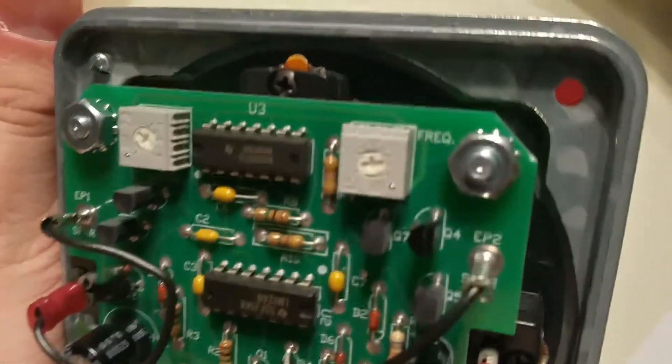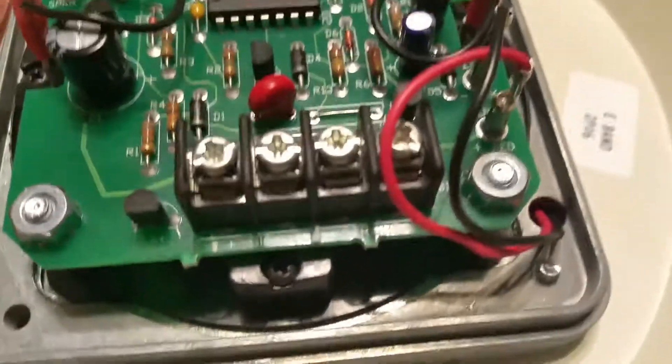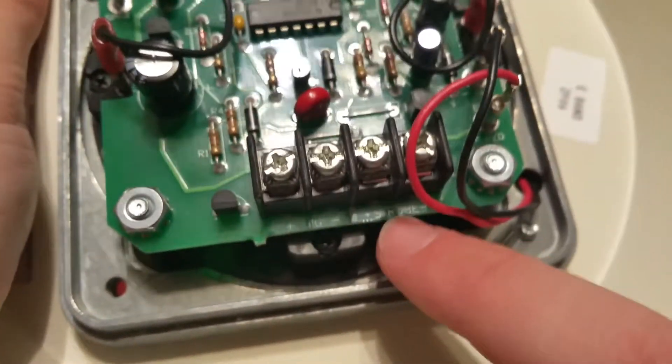And here's the back. You have a potentiometer for frequency control and you have a potentiometer for volume control. And you have four terminals down here. The signal is the left two and the strobe is the right two.